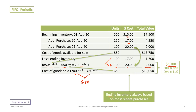Under FIFO, ending inventory is always based on the most recent purchases. Because first in, first out: the beginning inventory came in first and was gone first. Then the first purchase came in, some was sold on the first sale, and some remained after the second sale. Of the last purchase on August 25th, all of that inventory remains.